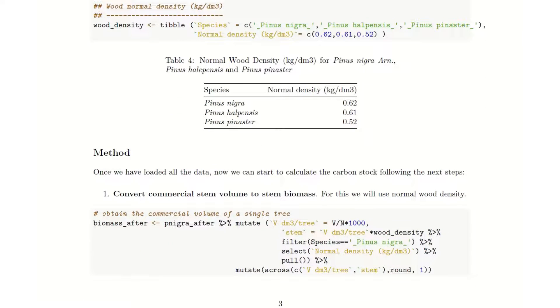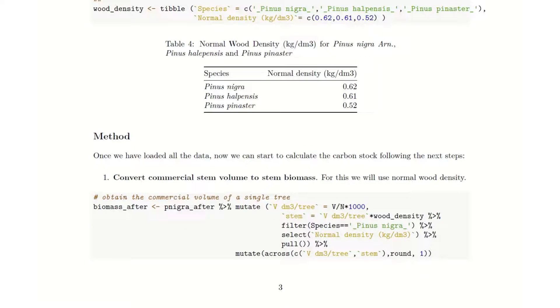So once we have loaded all the data in our R code, now we can start to calculate the carbon stock following next steps. First, we convert the commercial stem volume to stem biomass. For this, we will use the normal wood density to transform the volume that we have in yield tables to biomass.